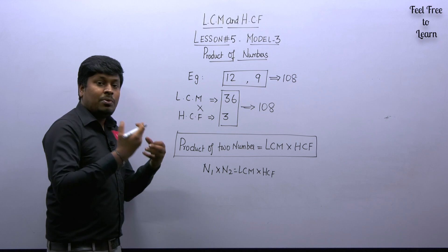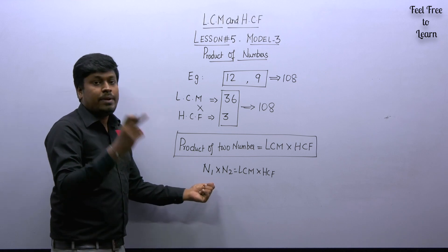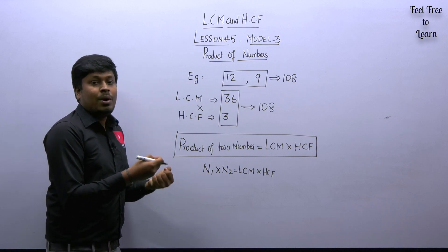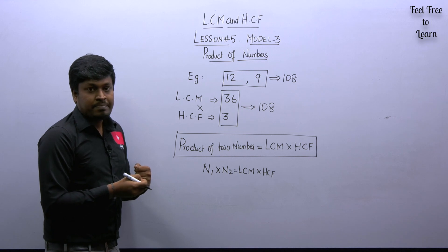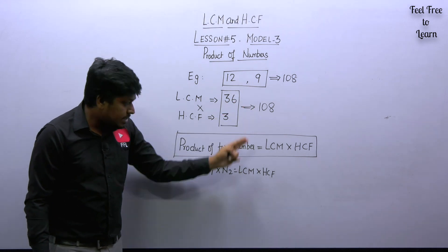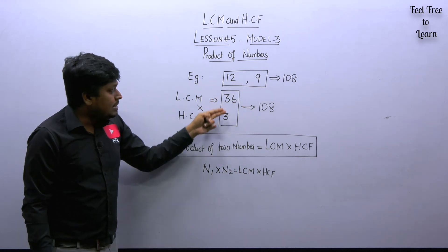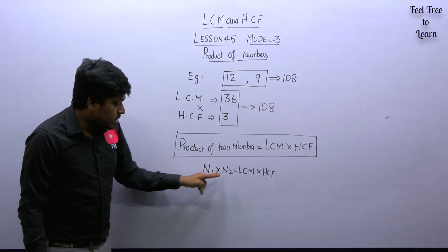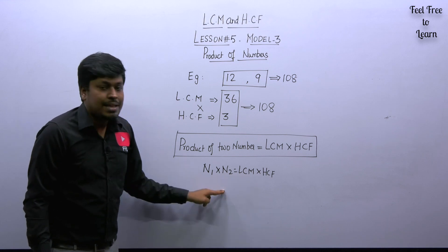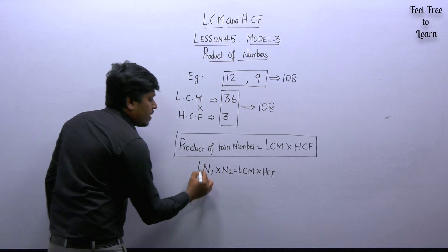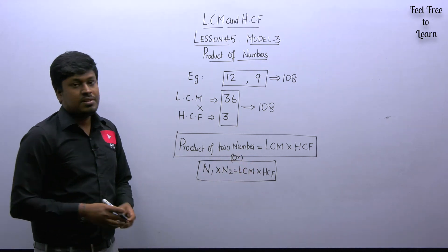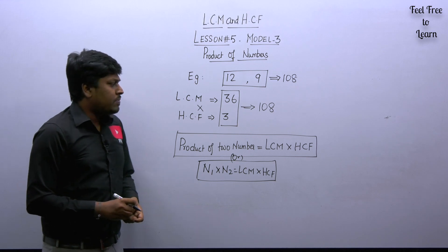Don't just rote-learn this formula. Some students memorize N1 × N2 = HCF × LCM without knowing the logic. Don't do that. You should know the logic behind the formula. Now you understand it: if you multiply the two given numbers you get 108, and after finding LCM and HCF, multiplying them also gives 108 — both are equal. That's what the property says.